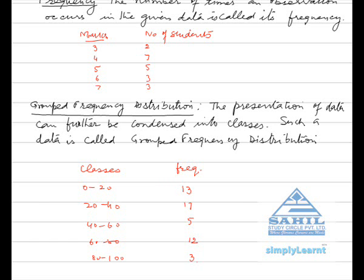Now 0 to 20 means 0 and above but less than 20. 20 to 40 means 20 and above but less than 40. In the same way, in each class, the higher class interval is included in the next class.